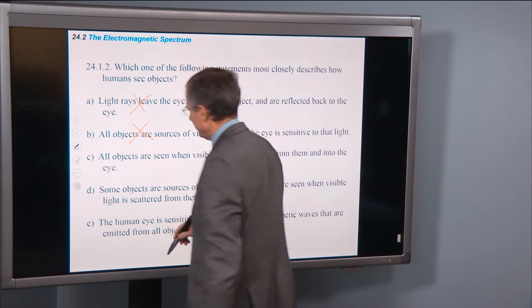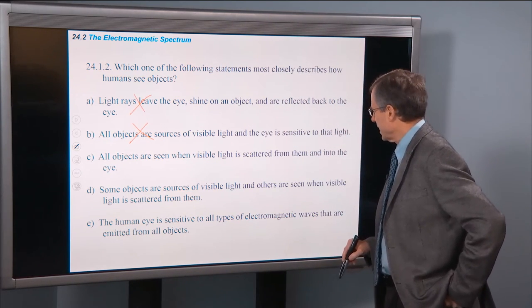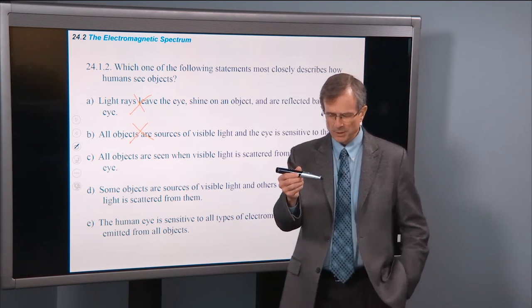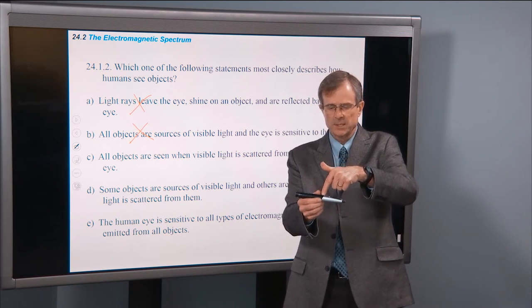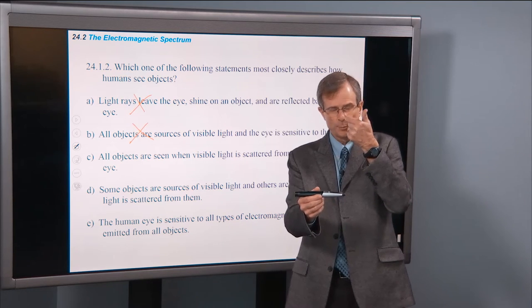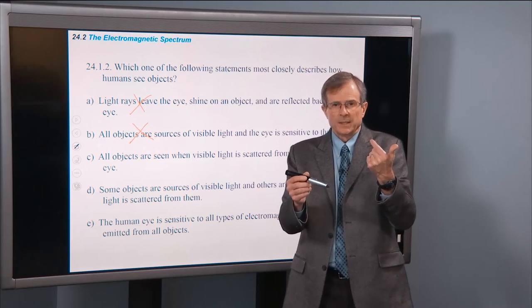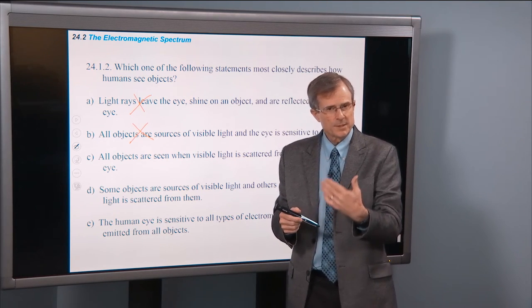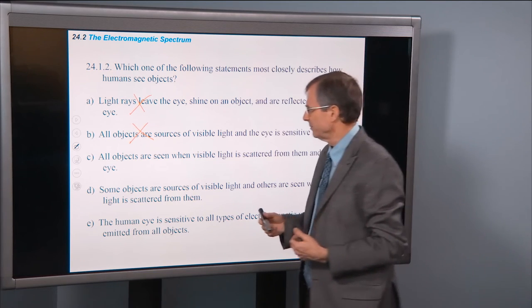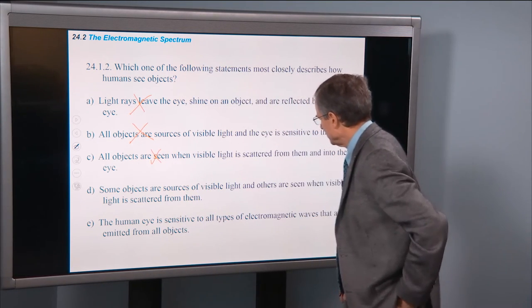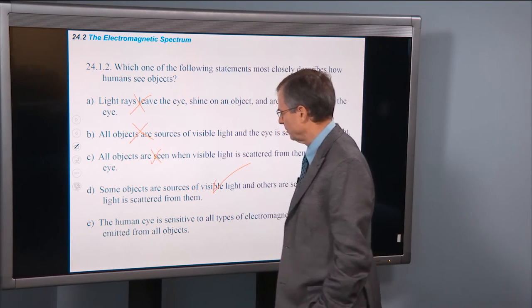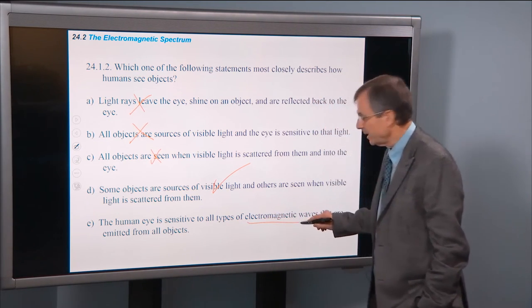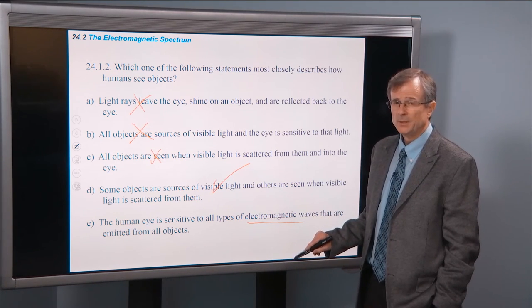All objects are seen when visible light is scattered from them and into the eye. So this object is seen when light is scattered from it. Light from the overhead lights hits this, is scattered from it, comes into my eye, helps me to see this object. But that's not true about the lights overhead here. If you look at the lights in the room that you're in right now, or at your glowing screen, it's not the scattered light that matters. It's light that's produced by that object. It's a source of light. So some objects are sources of visible light, and others are seen when visible light is scattered from them. So that's the one we're looking for. Human eye is sensitive to all types of electromagnetic waves that are emitted from all objects. Well, is it sensitive to radio waves? No, you can't see them. You can only see in the visible range.